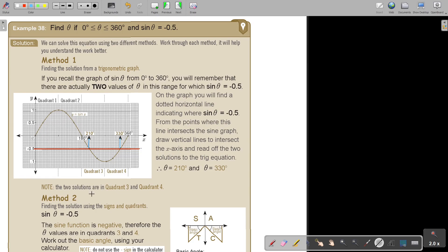The two solutions are in quadrant three and four. That's quadrant one, quadrant two, quadrant three, quadrant four. You can also see it from your CAST diagram. Where is sin? Sin is positive there, but sin is negative in this quadrant.